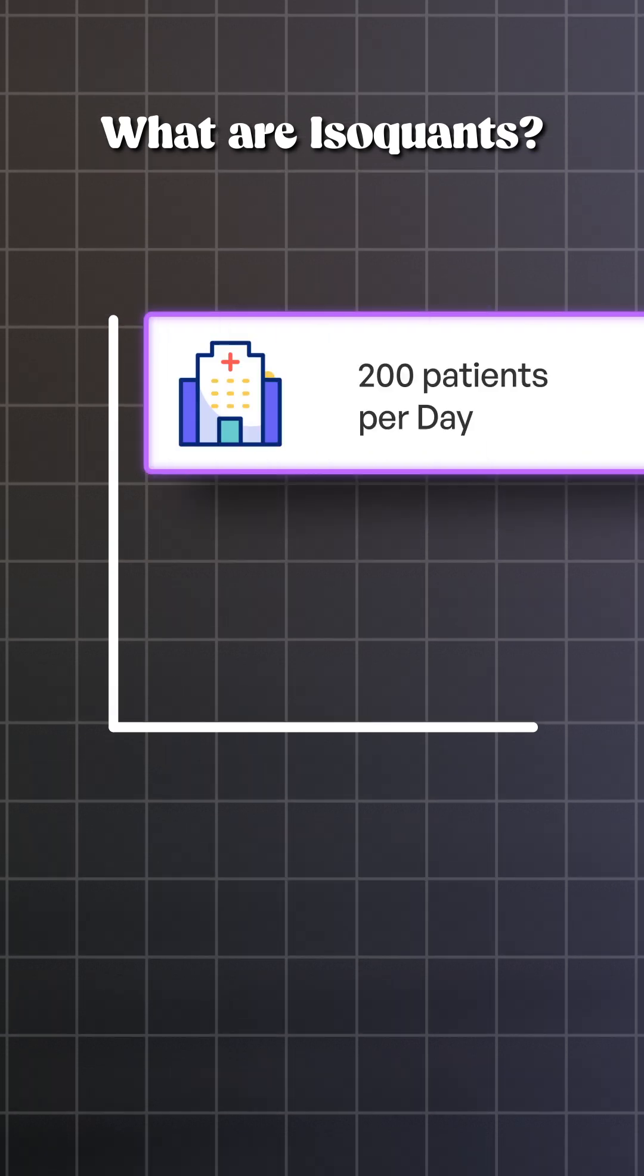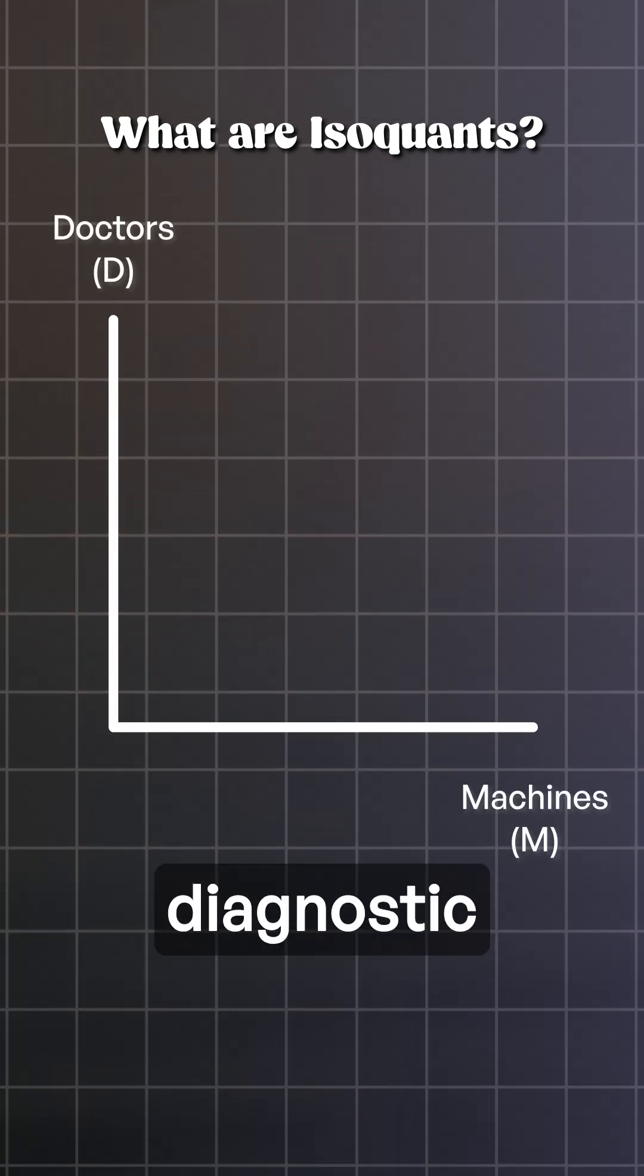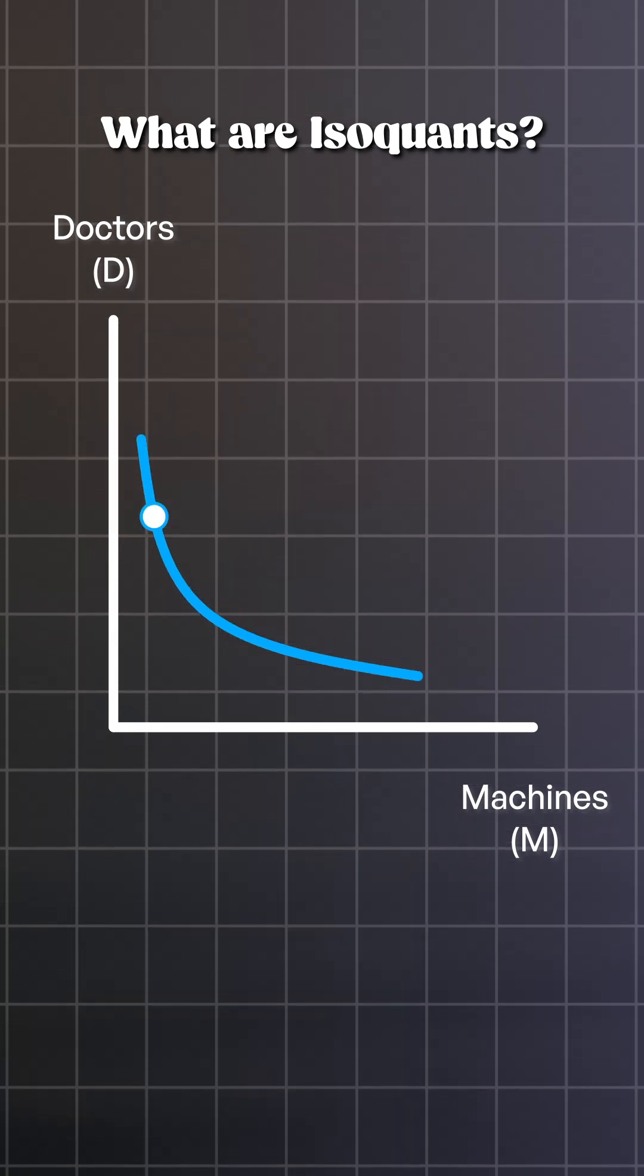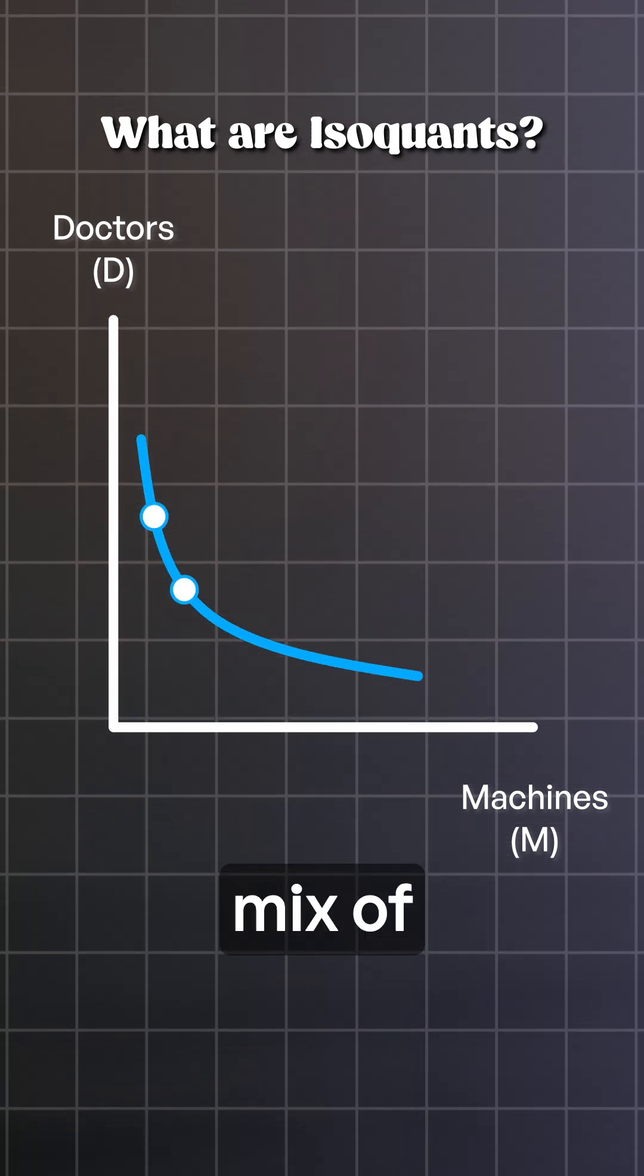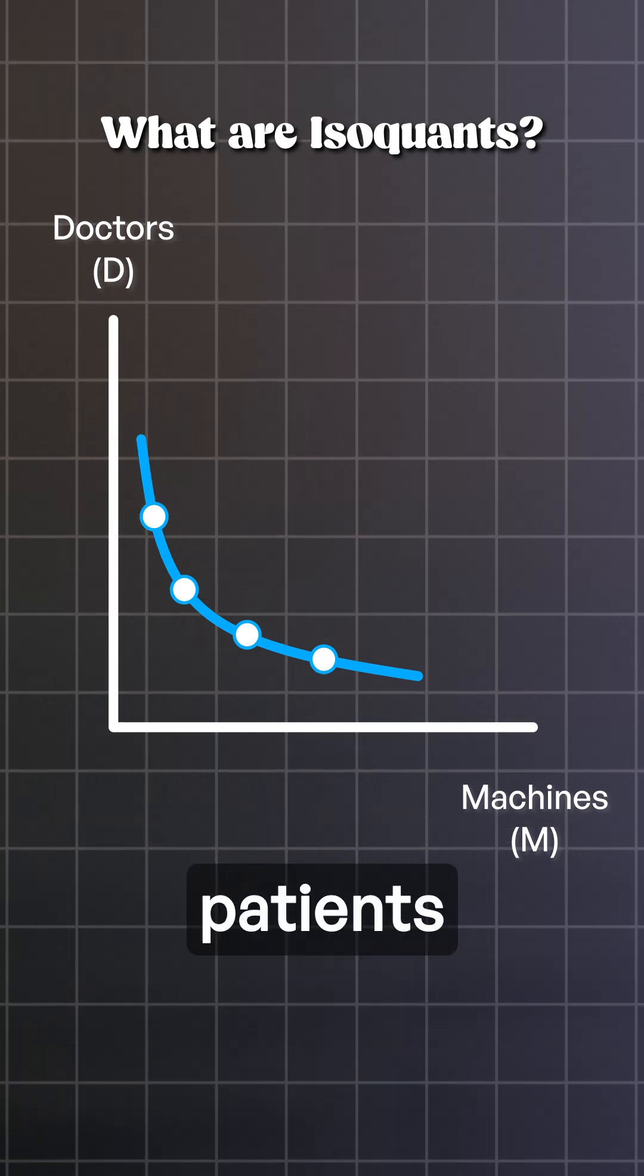Imagine a hospital that needs to treat 200 patients per day. Our two inputs are doctors and diagnostic machines. Here's the isoquant line. Every point on this curve represents a different mix of doctors and machines, but always with the same result: 200 patients treated.